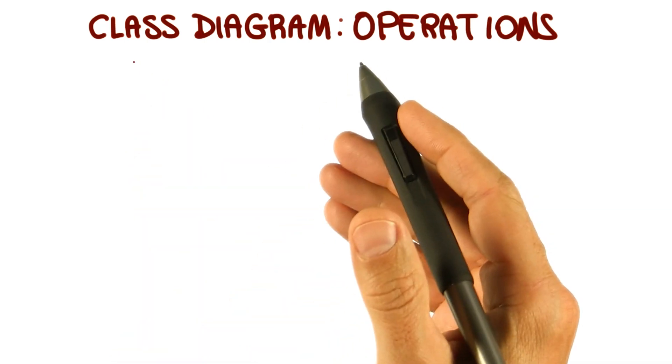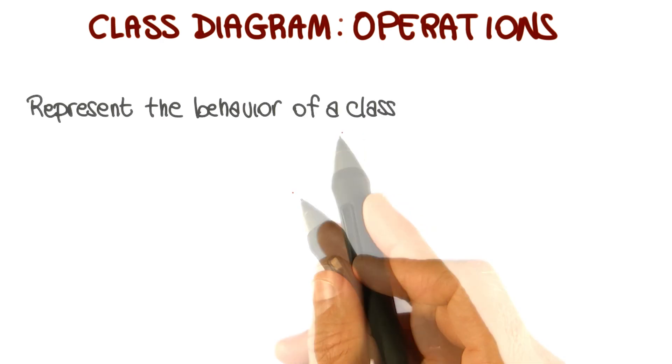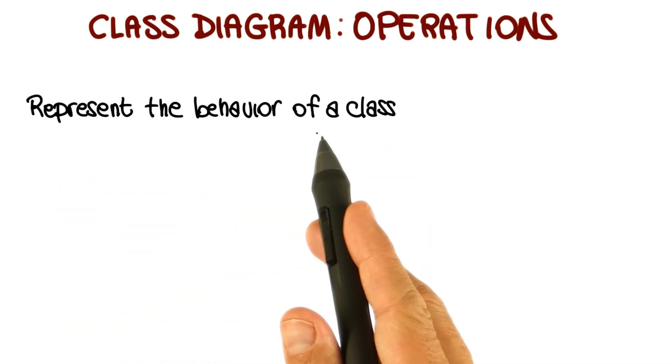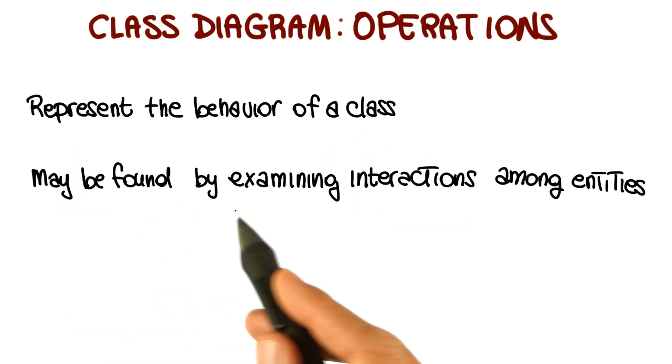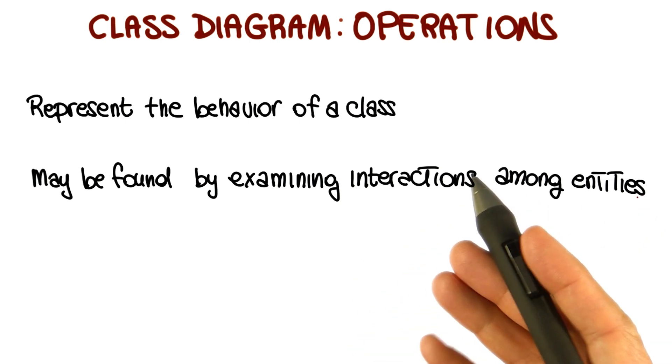At this point, we have our classes, our attributes. What we're missing is the operations for the class. Let me remind you that operations represent the behavior of a class, and that they might be found by examining interactions among entities in the description of my system.